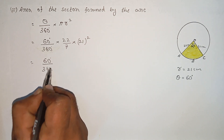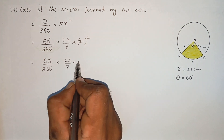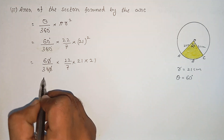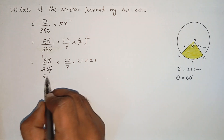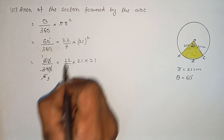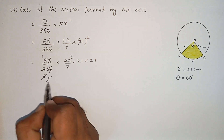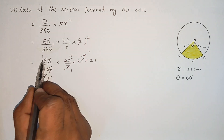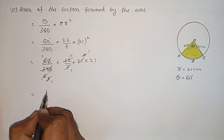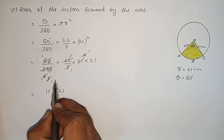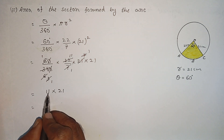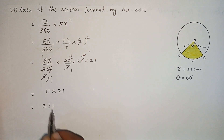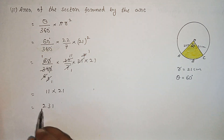60 degrees divided by 360 degrees into 22 by 7 into 21 squared, which is 21 multiplied by 21. Cancelling: 60 over 360 gives 1/6; 7 cancels with 21 giving 3; 3 into 22 is 66; then 3 into 21 gives 63. Simplifying numerator: 11 into 21 equals 231. The area of the sector is equal to 231 cm squared.